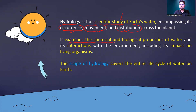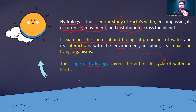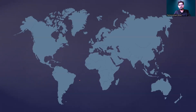Further, hydrology examines the chemical and biological properties of water — so it involves biochemistry as well — and also interactions, which is a very important principle of ecology that applies to hydrology, including its impact on living organisms. The scope of hydrology covers the entire life cycle of water on earth. So in summary: hydrology studies occurrence, movements and distribution of water, its physical and chemical properties, and the full life cycle.